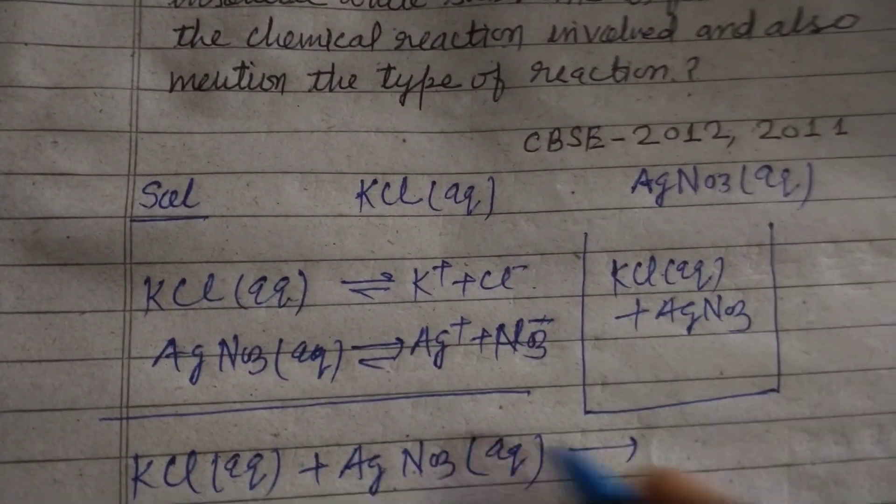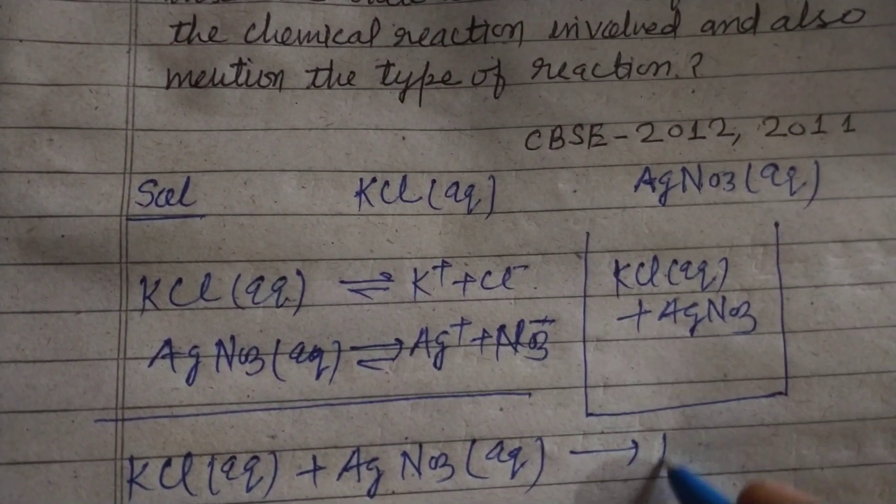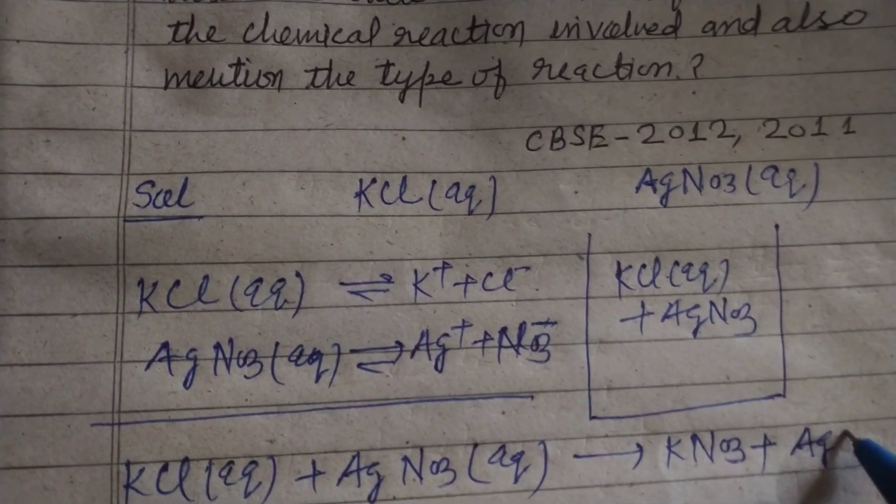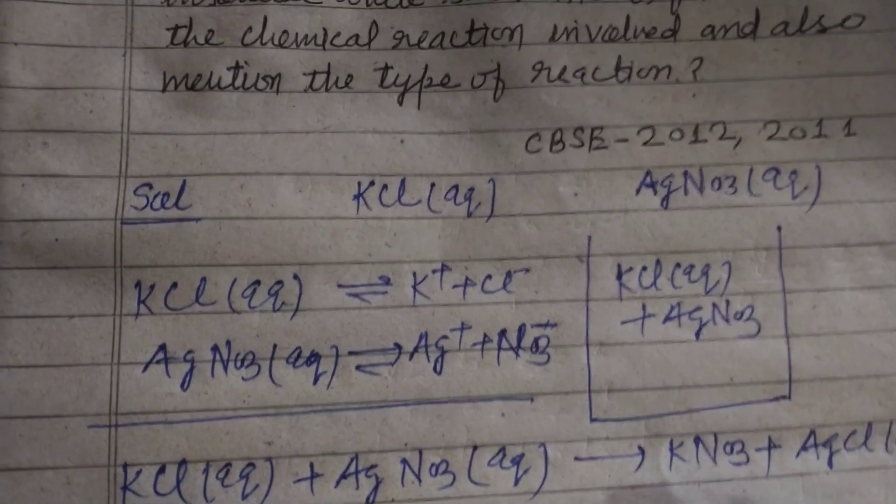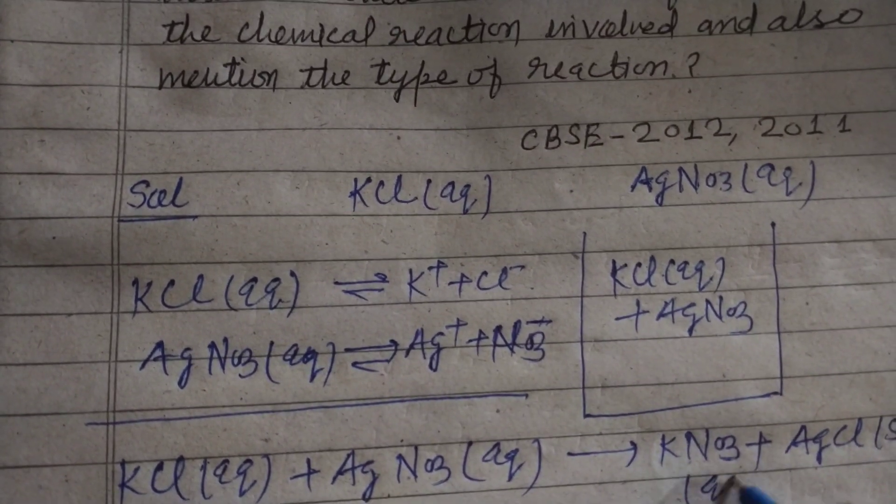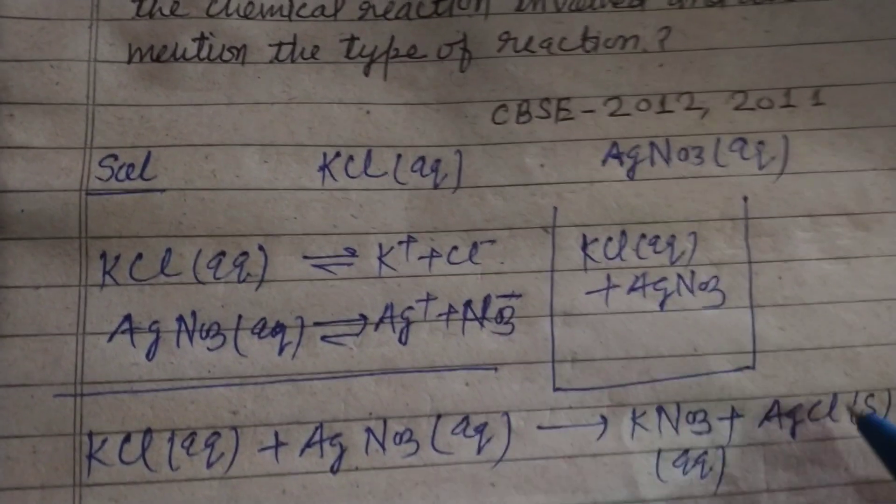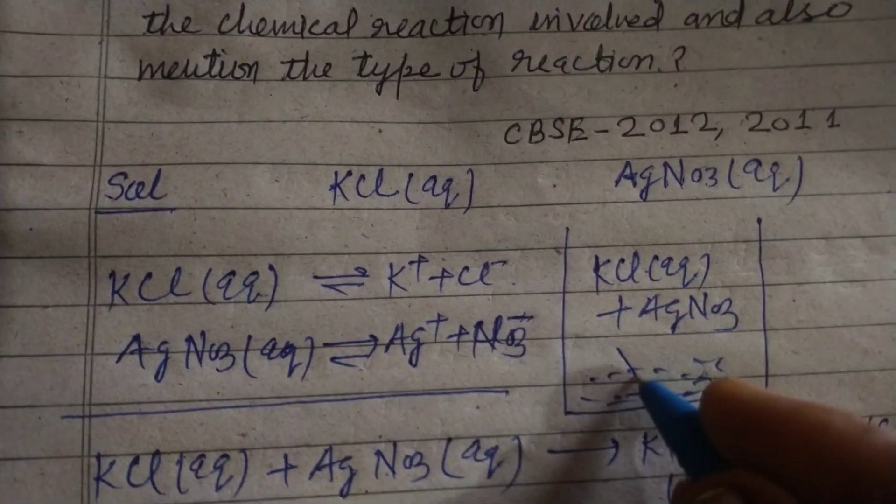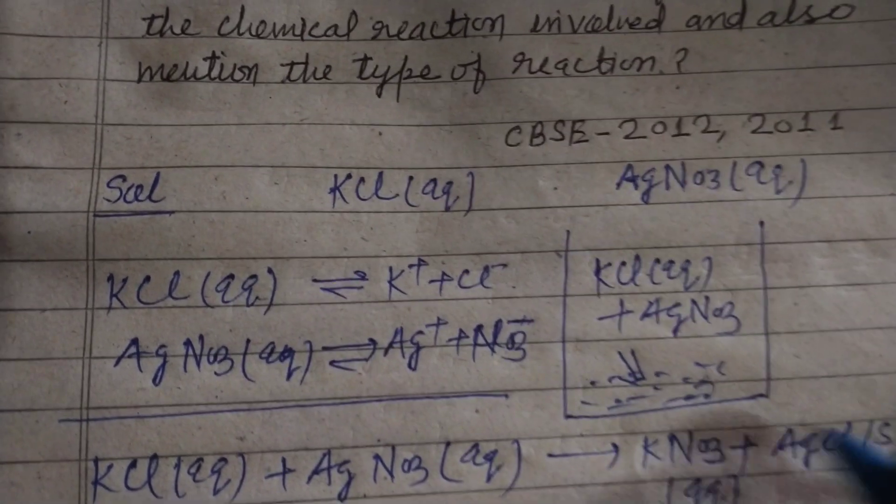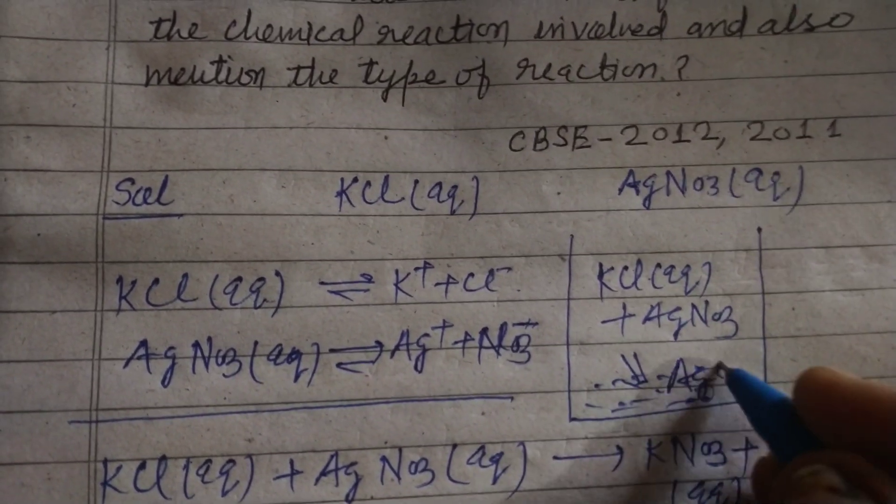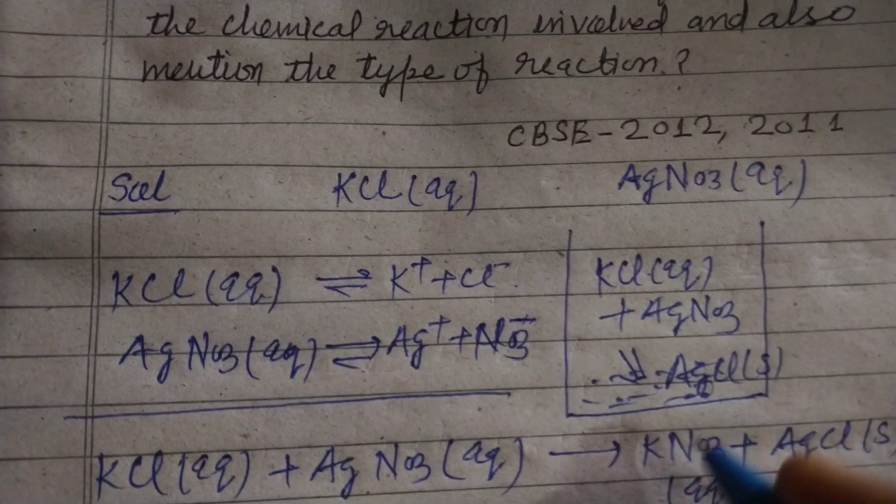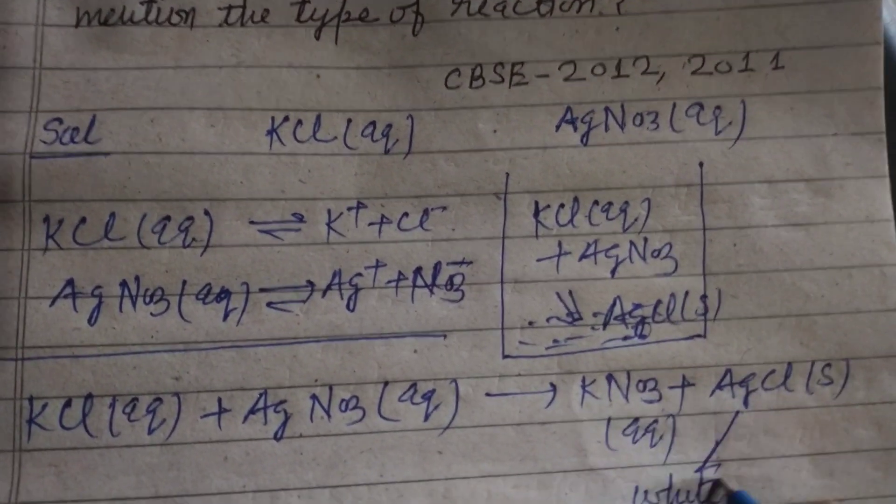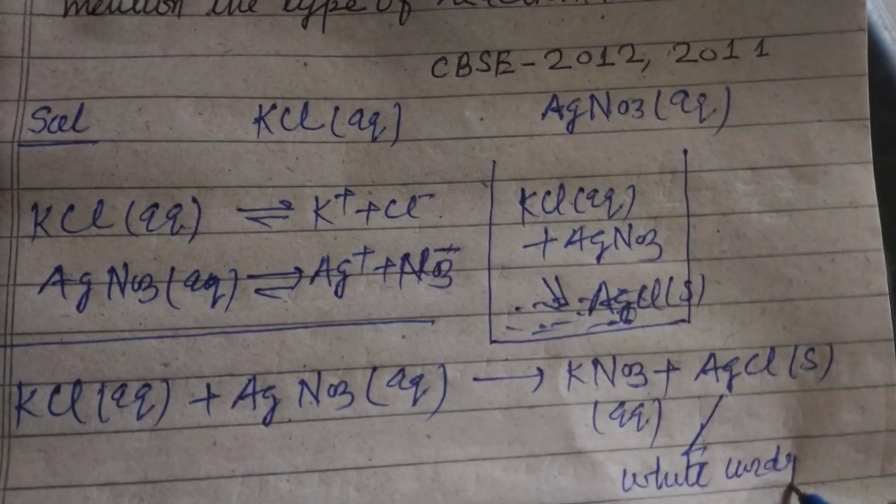After that they react and form KNO3 plus AgCl. This is solid and this is aqueous. And this AgCl forms at the bottom, and its color is white curdy precipitate.